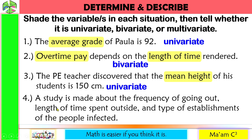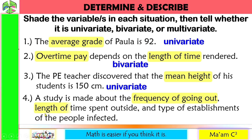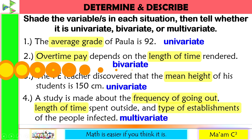Last one: a study is made about the frequency of going out, length of time spent outside, and type of establishments visited by people infected. The variables are: the frequency of going out, the length of time spent outside, and the type of establishments — whether enclosed or open space. We have three variables, so this is multivariate.